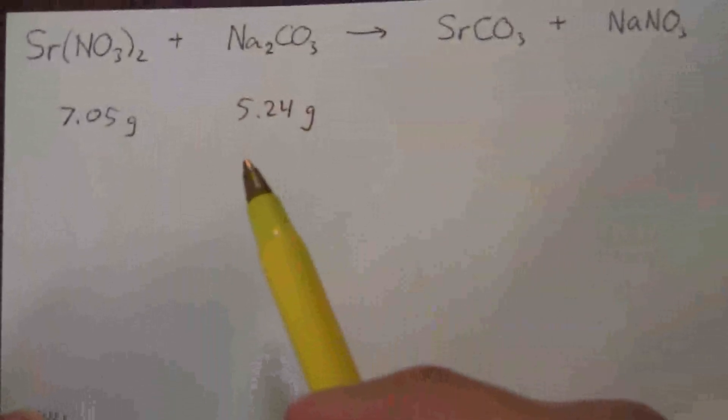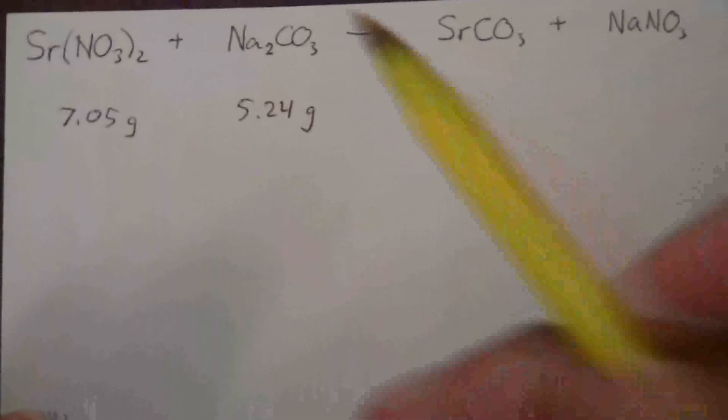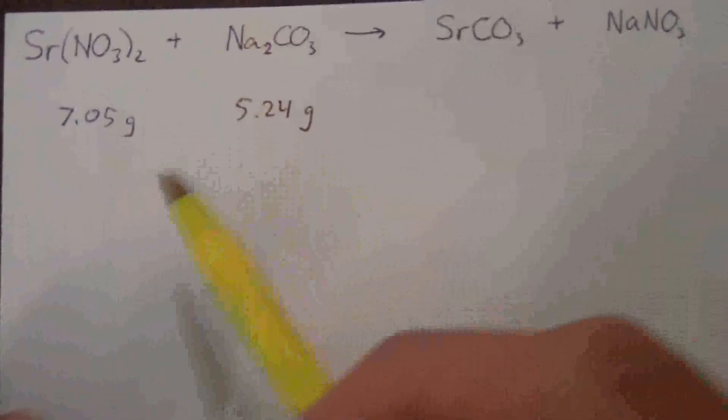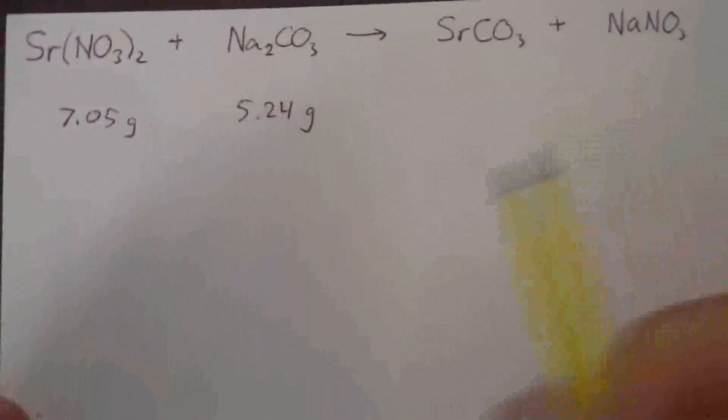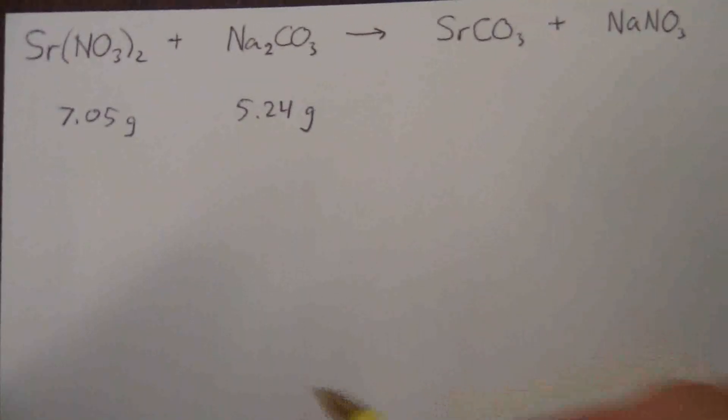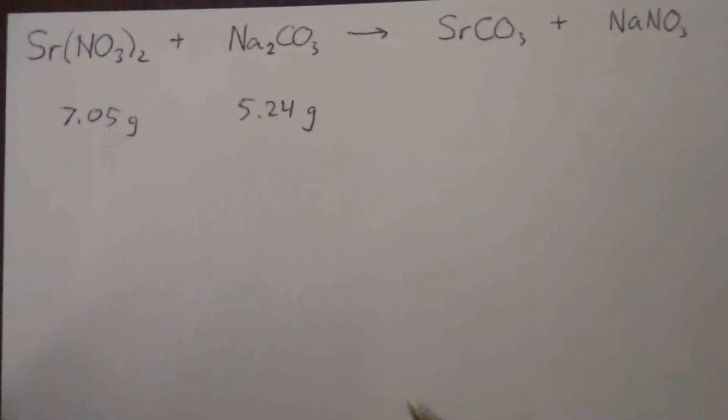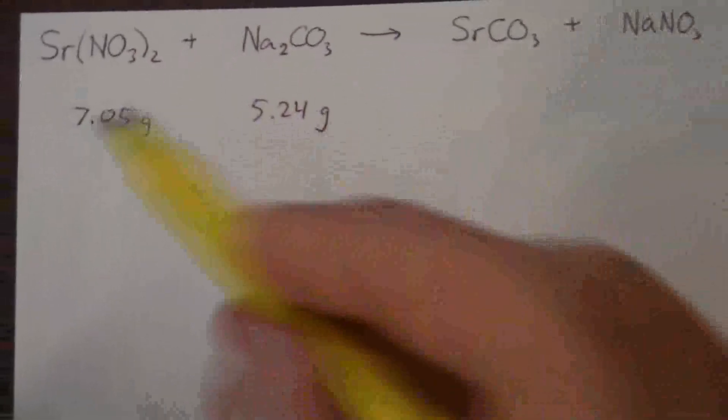And I want to know which one will be used up first. We call this the limiting reagent because one of these will be used up first and then there's not going to be any more to react and so it limits how much of the products can be formed. So first of all, whenever we have a chemical equation, we must make sure it is balanced.